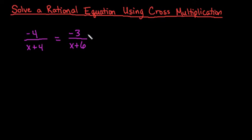So what we want to do, when I say cross-multiply, I'm going to take the numerator of this side and multiply it by the denominator of the opposite side.